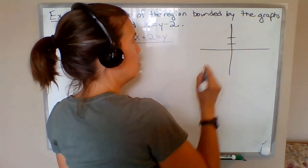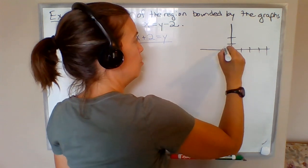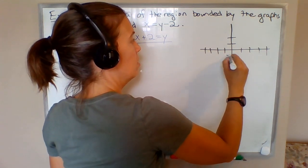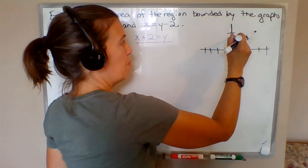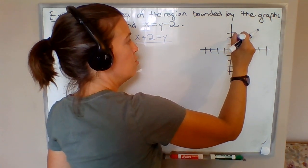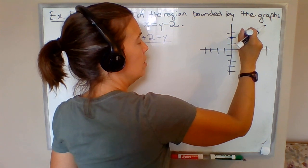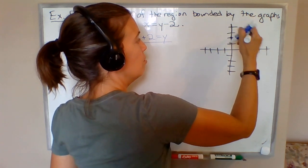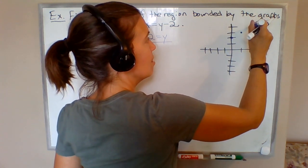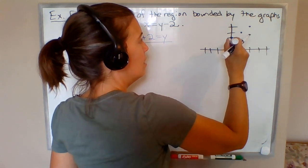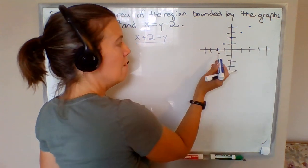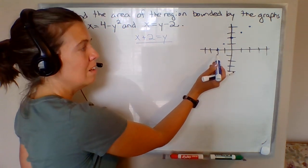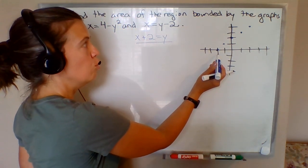So y-intercept at positive 2. Let me put a few more hash marks on here. Y-intercept at positive 2, slope is positive 1, so we go up 1 over 1. I hope I left enough room—I do make that mistake frequently. Up 1 over 1, I'm going to go back 1 and down 1.